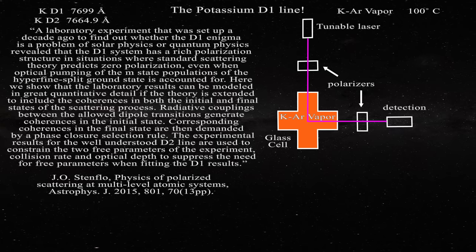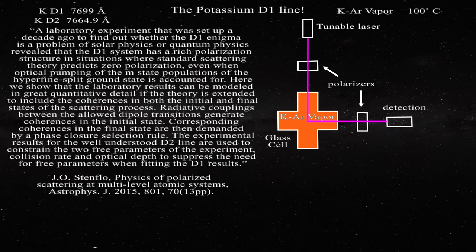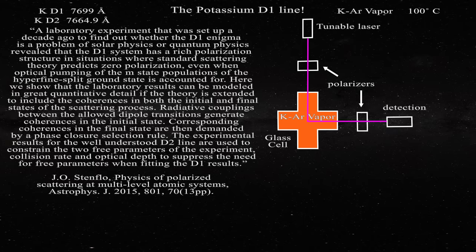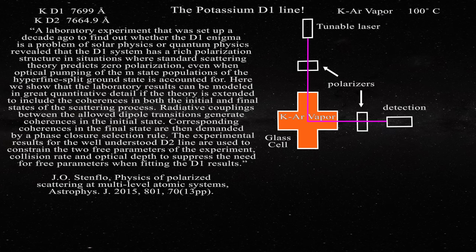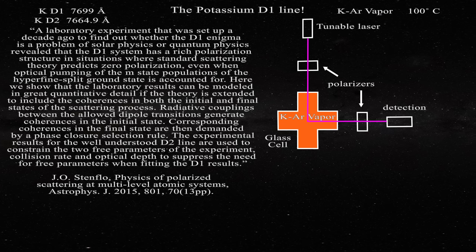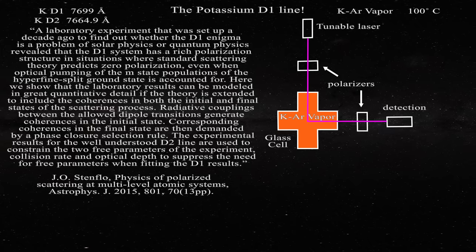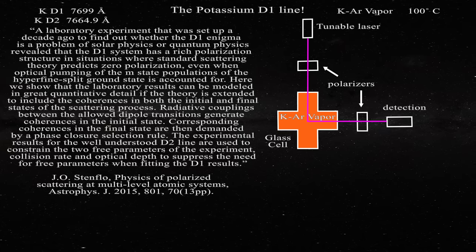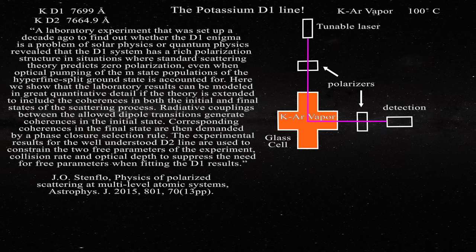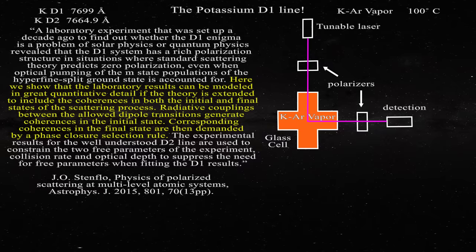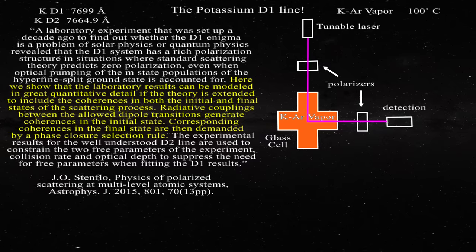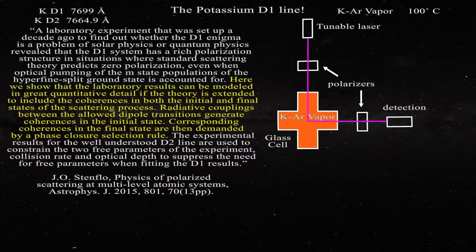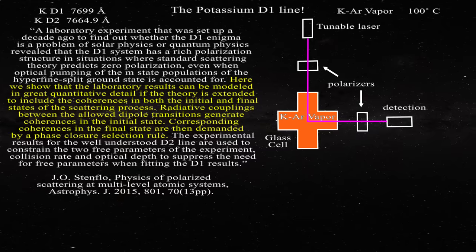Here we show that laboratory results can be modeled in great quantitative detail if the theory is extended to include the coherence in both the initial and final states of the scattering process. Radiative couplings between the allowed dipole transitions generate coherences in the initial state. Corresponding coherences in the final state are then demanded by a phase closure selection rule. The experimental results for the well-understood D2 line are used to constrain the two free parameters of the experiment, collision rate and optical depth, to suppress the need for free parameters when fitting the D1 results. The central item to note in this quotation was contained in these few lines. Professor Stenflo invoked radiative coupling between the allowed dipole transitions to generate coherence in the initial state. The question remains why should this occur at all, but such dramatic action was not necessary if he had simply concentrated on the chemistry.